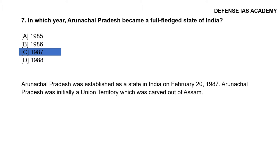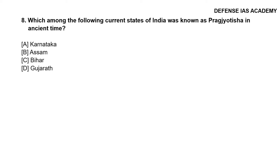Arunachal Pradesh was initially a union territory which was carved out of Assam. Question 8: Which among the following current states of India was known as Pragjyotisha in ancient times? The correct answer is option B, Assam.